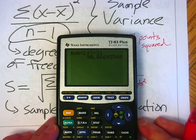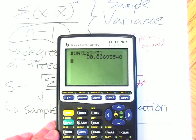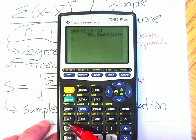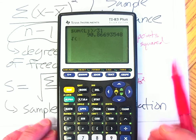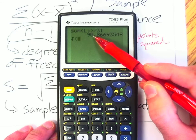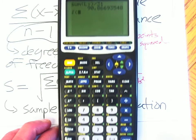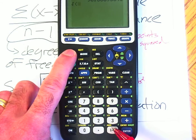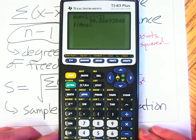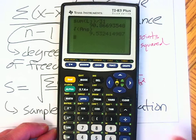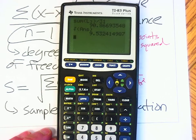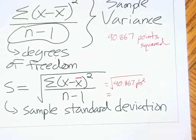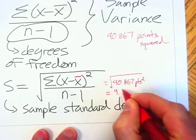So on the calculator, if you want to take the square root of that answer, notice the square root is above the squaring button. So we'll press the second button and the squaring button. That brings up the square rooting option. And then to bring up our previous answer, notice that above the negative sign, you see ans for answer. If you press second and then the negative sign under the three, that will bring up your previous answer. Close the parentheses. And now finally, there we are at 9.5. 9.5 points. That is the sample standard deviation.